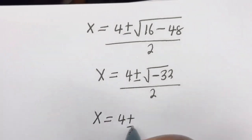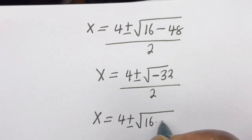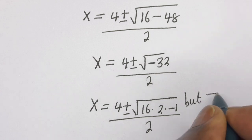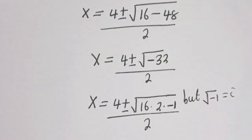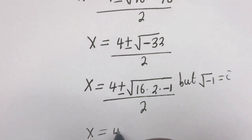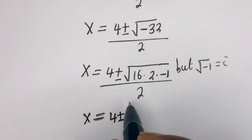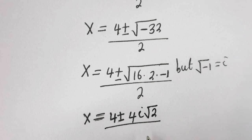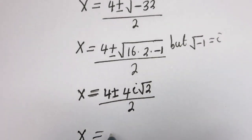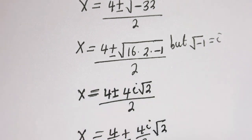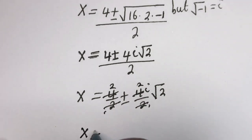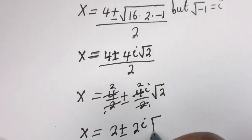s is equal to 4 plus or minus the square root of minus 32, which can be written as square root of 16 times 2 times minus 1, divided by 2. Since the square root of minus 1 is equal to i, substituting gives s equals 4 plus or minus 4i root 2, divided by 2. Simplifying: s equals 4 divided by 2, plus or minus 4i root 2 divided by 2, giving s equals 2 plus or minus 2i root 2.